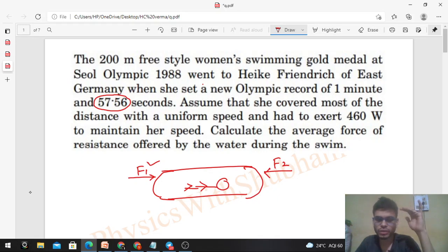Now you can see it is mentioned that she covered most of the distance with a uniform speed. If she is moving with a uniform speed, then the net force on the swimmer must be zero, right? Because acceleration is zero. It is moving with a constant speed, so net force is zero. What does that mean? F1 is equal to F2.